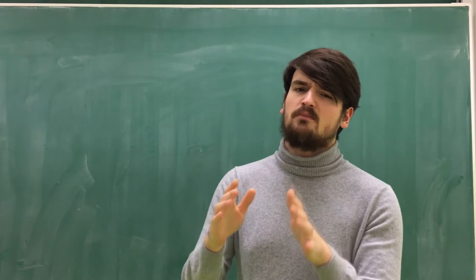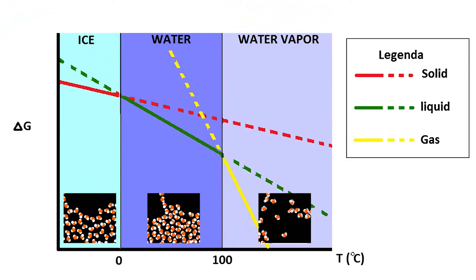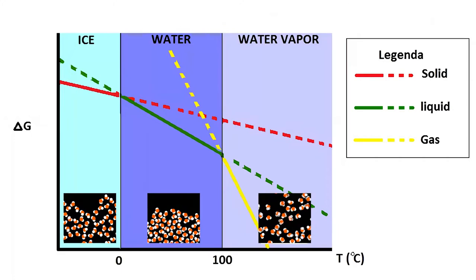If we take a look at a graph of the Gibbs free energy plot as a function of temperature things will probably become a bit more clear. Here we see the normal phase transitions of water. We see that if the temperature is below zero degrees Celsius,